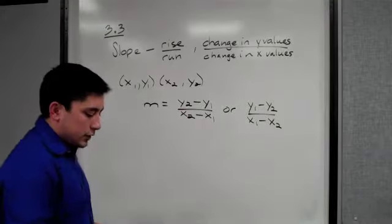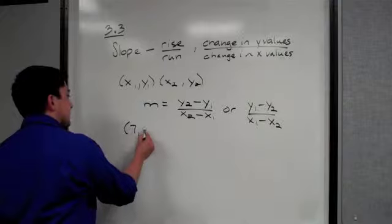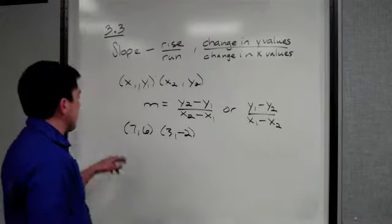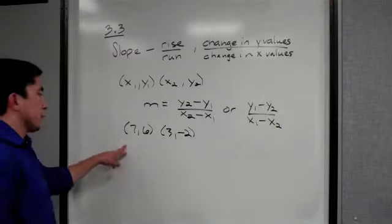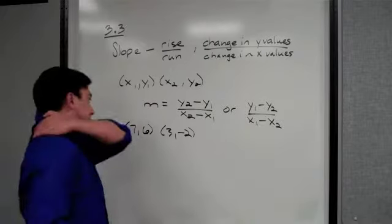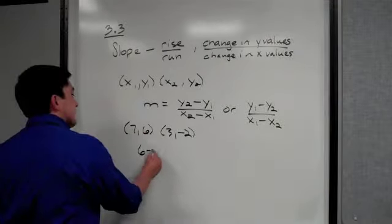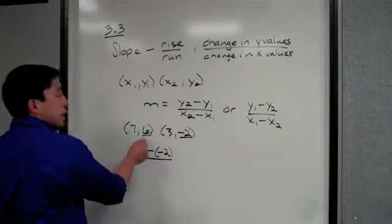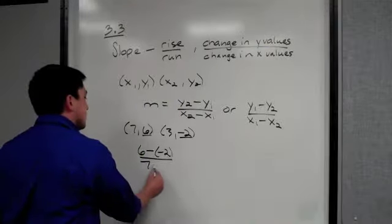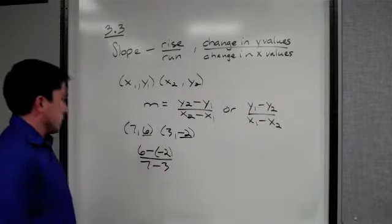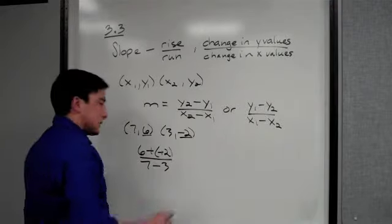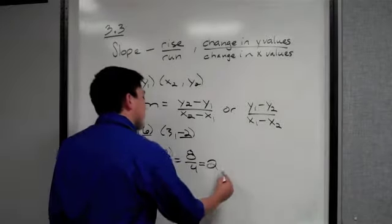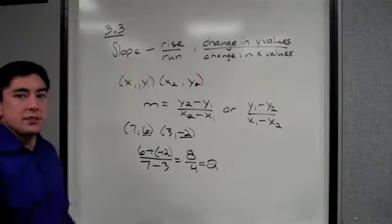Let's try a few. We have (7, 6) and (3, -2). To find the slope between these two points, pick a y value to use. I'll choose the 6: 6 minus my other y value which is -2, over 7 minus 3. Two negatives next to each other becomes plus, so we get 8 over 4, which reduces to 2.